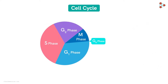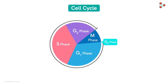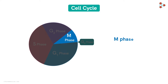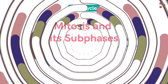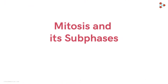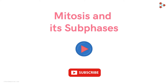Now that we have had a look at all the important phases in the Interphase, let us have a look at the next important part of the cell cycle — the M-Phase. This could be mitosis or meiosis depending upon the types of cells. Even this M-Phase shows different stages, and we will begin with mitosis and its sub-phases in our upcoming videos.